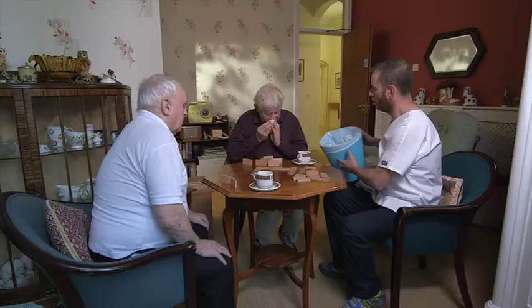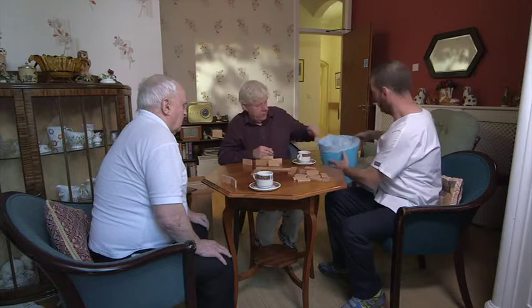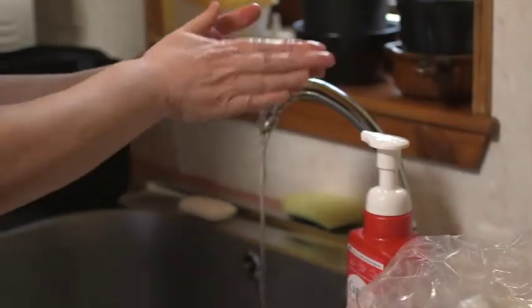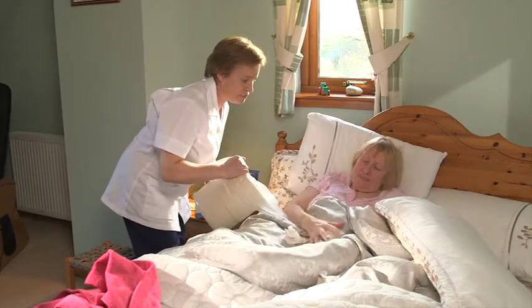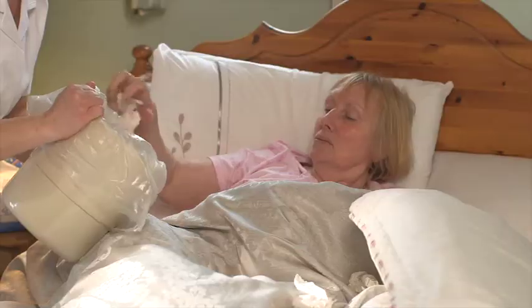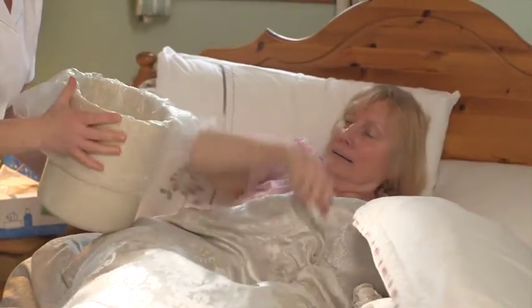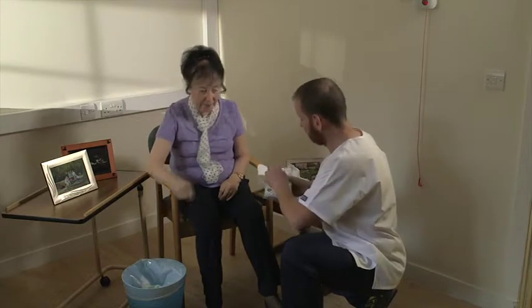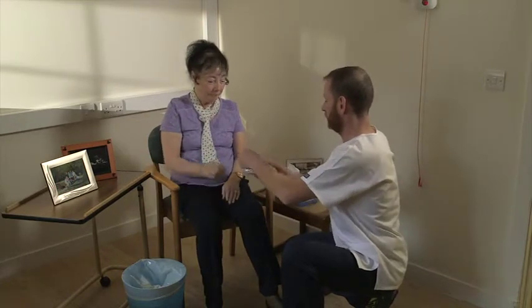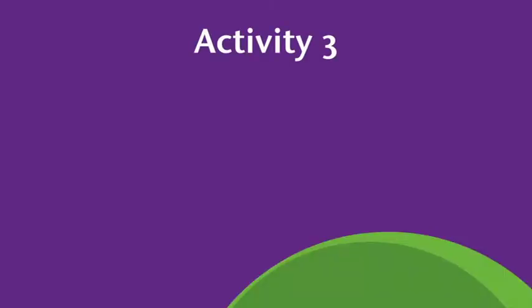Always use disposable tissues to catch sneezes and cover coughs, then put the used tissue immediately in the bin and carry out hand hygiene with liquid soap and warm running water. Hankies that require washing or laundering are not ideal. Instead, you should try to provide paper tissues and encourage the people you care for to follow good respiratory hygiene. Flu immunisation for those who are eligible should also be encouraged.